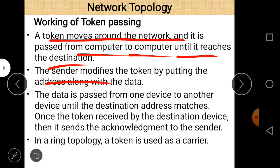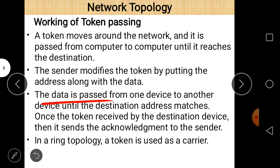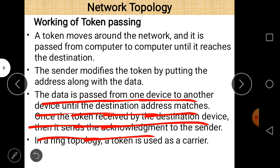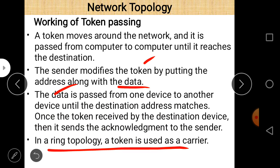The sender modifies the token by attaching the destination address along with the data. The token is passed from one device to another until the destination address matches. Once the token is received by the destination device, it sends an acknowledgement back to the sender. In ring topology, a token acts as a carrier — the sender sends data along with the address, and the token moves until the destination address matches.